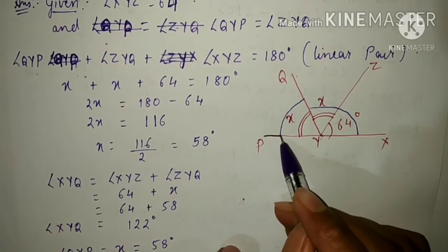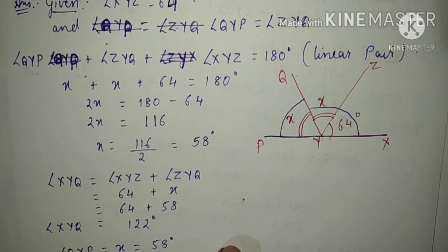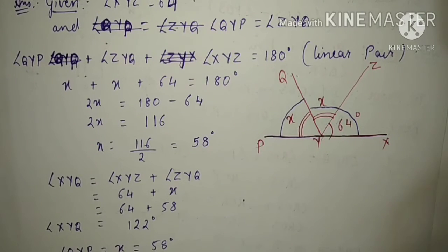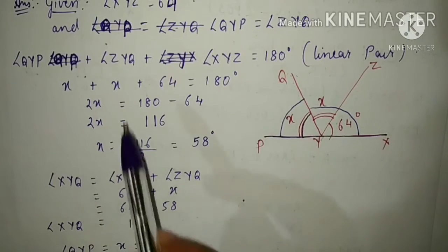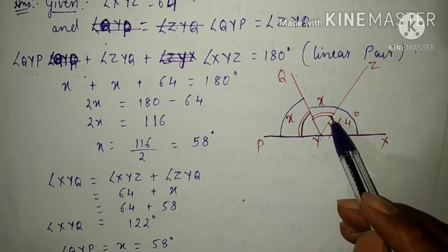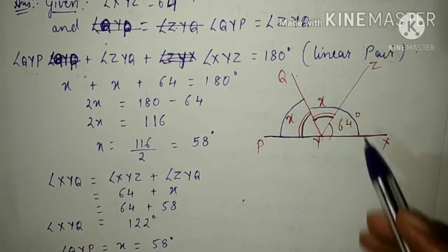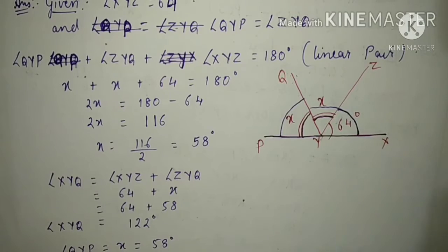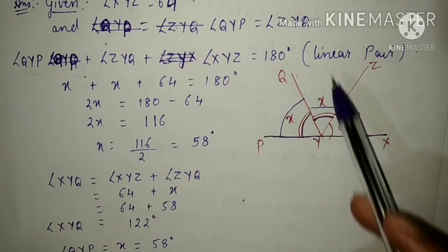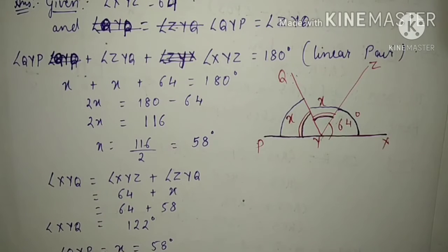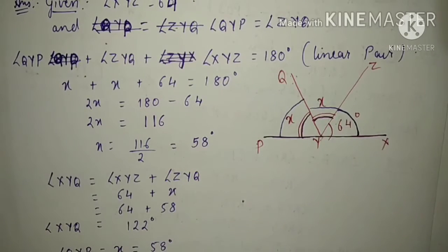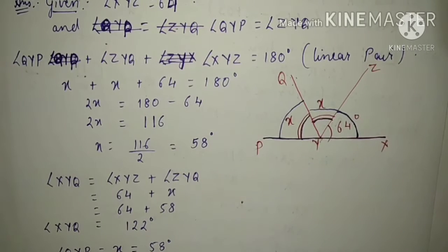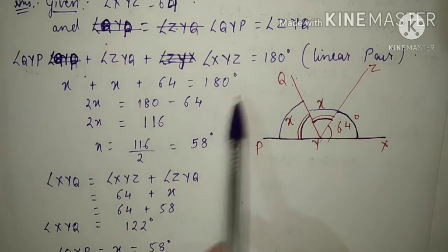Now, since PX is a straight line, the sum of all three angles will be equal to 180 degrees. So: angle QYP plus angle ZYQ plus angle XYZ equals 180 degrees, because of linear pair. Now QYP is equals to x, and ZYQ is also equal to x, and XYZ is equals to 64. So x plus x plus 64 equals 180 degrees.